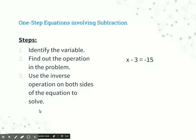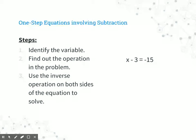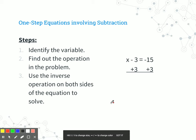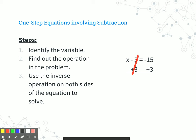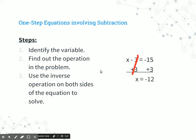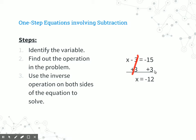Let's look at one with subtraction. The variable is on the left side and the operation is subtracting, so the inverse operation would be to add. The opposite of subtracting 3 would be to add 3 to both sides. A negative 3 and a positive 3 cancel out, leaving x on the left side by itself. Negative 15 plus a positive 3 is negative 12. You could take that negative 12, plug it back in, and negative 12 minus 3 would be negative 15.